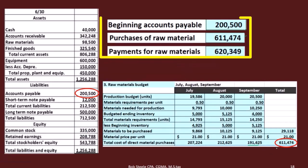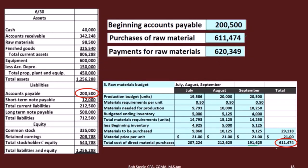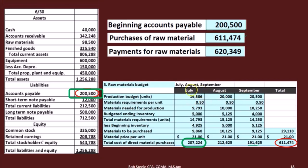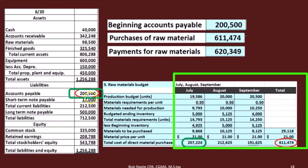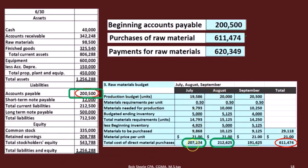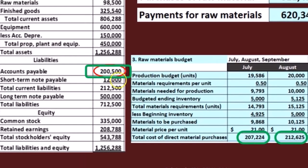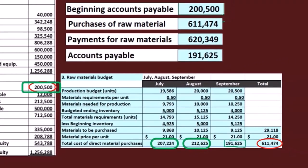Then we have to think about how much we paid for raw materials. The assumption is that we pay the full previous month's purchases the following month. So in July we paid the $200,005 that was purchased the month before, then in August we paid $207,224, and then in September we paid $212,625 for those purchases. That leaves us with this number — if we add up $200,005 plus $207,224 plus $212,625 we come up with $620,349.